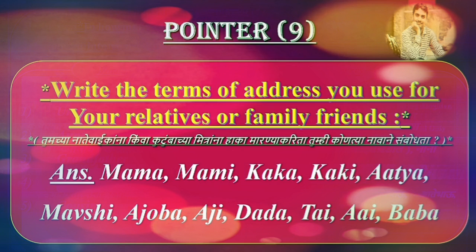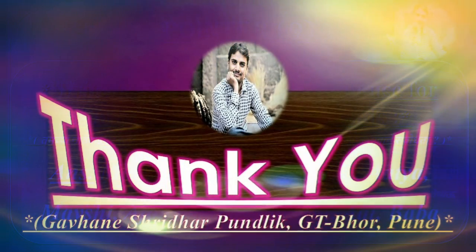Pointer ninth. The terms of address you use for your relatives or family friends — tum chha natye waikan na kiwa tutumbacha mitran na haka maranya karita tumhi konatya nawaane sambodhata. Answer: Mama, Mommy, Kaka, Kaki, Atya, Maoshi, Azoba, Azzi, Dada, Tai, Ai and Baba. Thank you.